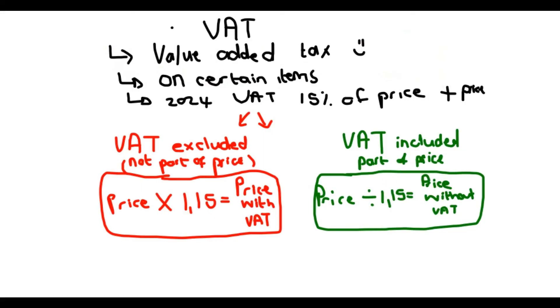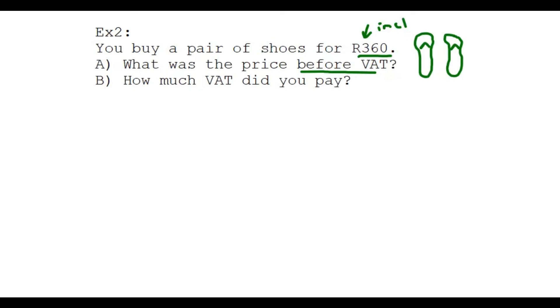VAT is included, so it's the green formula. We want to find the price without VAT or before VAT, the same thing. We're going to say the price divided by 1.15. The price is R360 divided by 1.15, and the answer is R313.04.